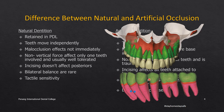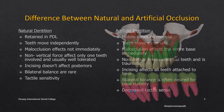Bilateral balanced occlusion is rare in the natural dentition since it is not a natural phenomenon; it is specifically created and designed in complete dentures for the sake of stability and retention. Natural dentition does not have balanced occlusion; it is governed by different factors such as canine guidance and group function intercuspation. Also, because of the periodontal ligament which contains various receptors — namely mechanoreceptors and proprioceptors — the teeth have excellent tactile sensibility.